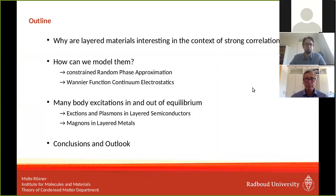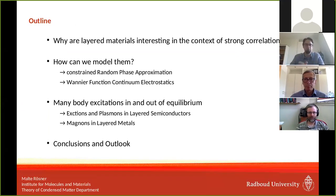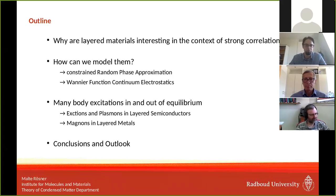For the outline, my plan is to convince you that layered materials are extremely interesting in the context of strong correlations, and that there is a very nice way to model them nowadays with the help of Wannier functions and together with the so-called constrained random phase approximation to bring these models to a material-realistic level. I will show results for many-body excitations — excitons and plasmons — in and out of equilibrium for layered semiconductors and layered metals.